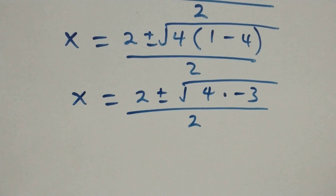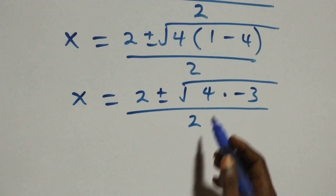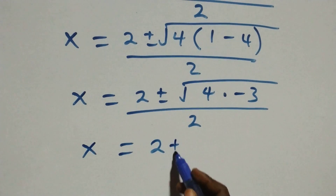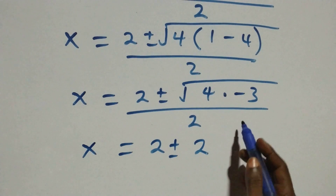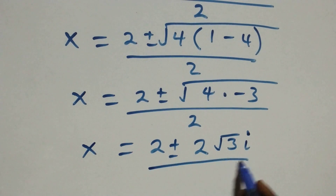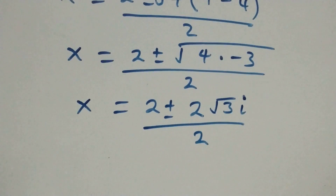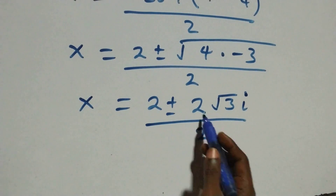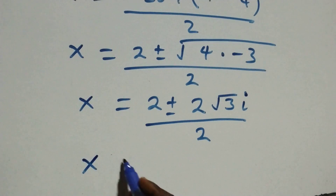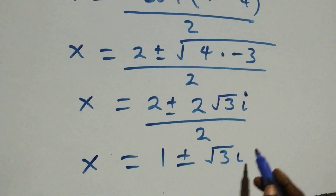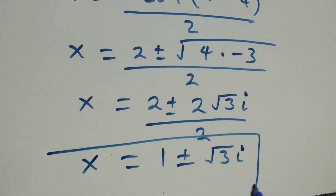Separating the root, √4 = 2, so we have x = (2 ± 2√(-3)) / 2 = (2 ± 2√3·i) / 2. Dividing through by 2 gives x = 1 ± √3·i. These are two complex solutions from the first case.